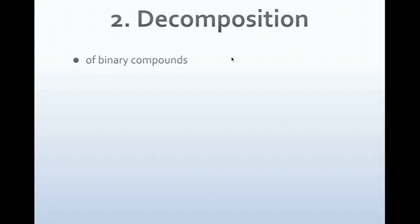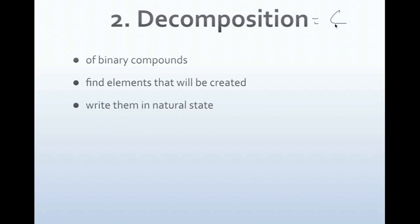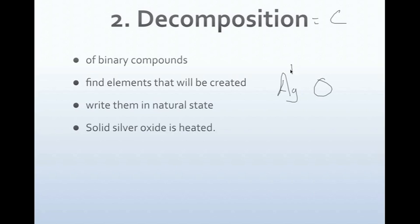In a decomposition reaction, we're going to start with a single compound rather than two elements. We have to find the elements that will be created — we break that compound up and write them in their natural state in the products. Our first example: solid silver oxide is heated. Silver is Ag with a plus 1 oxidation number, and oxygen is O with a negative 2 oxidation number. We crisscross to get Ag2O as our starting compound.